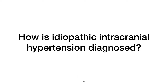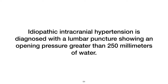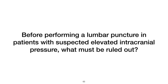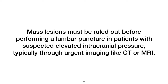How is idiopathic intracranial hypertension diagnosed? Idiopathic intracranial hypertension is diagnosed with a lumbar puncture showing an opening pressure greater than 250 millimeters of water. Before performing a lumbar puncture in patients with suspected elevated intracranial pressure, mass lesions must be ruled out, typically through urgent imaging like CT or MRI.